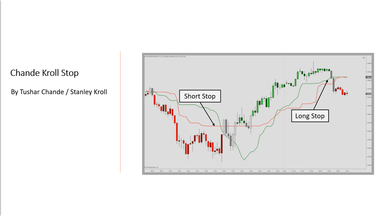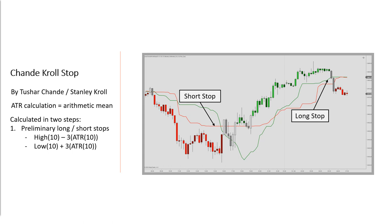As for the calculation, the Average True Range is used applying the arithmetic mean formula. For a long stop, by default, you take the highest high of the last 10 bars and find a preliminary stop by subtracting a three-times ATR multiple of the lookback period from that highest high. For the short scenario, you take the lowest low of the last 10 bars and add a three-times ATR multiple to that lowest low.